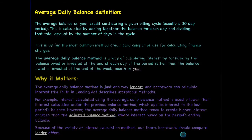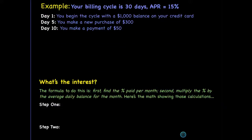Let's do an example. Our billing cycle is 30 days, and our annual percentage rate is 15% — that may seem high, but that's pretty typical for credit cards; in fact, they can get as high as 29%, so you have to be very careful to read the fine print before you carry a balance. On the first day, you began the cycle with a $1,000 balance on your credit card, which probably means you didn't pay off the balance from the previous month.